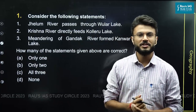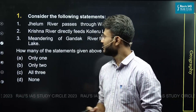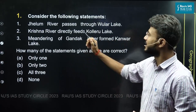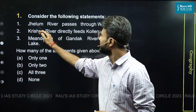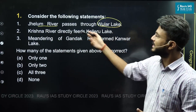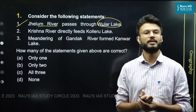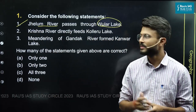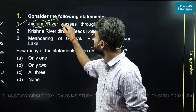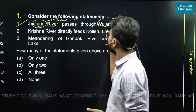Let us discuss question number one from the geography section. There were three statements given — a factual question. Statement one says that the Jhelum river passes through the Wular lake. This statement is factually correct. We all know the basics of the Indus river system, and Jhelum is an important tributary of the Indus river. It does pass through the Wular lake.